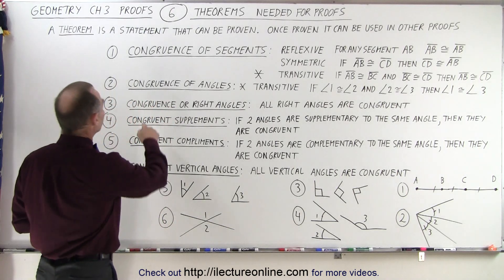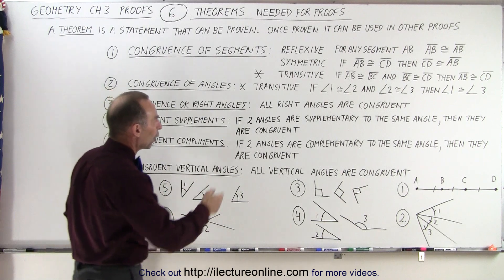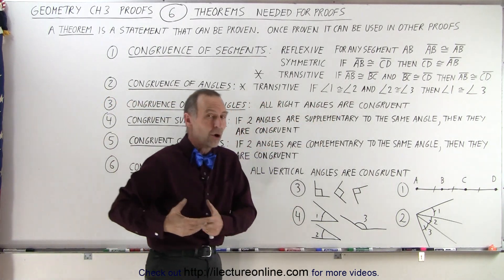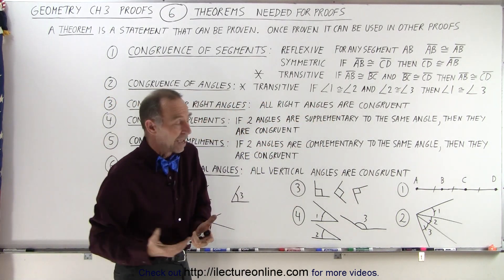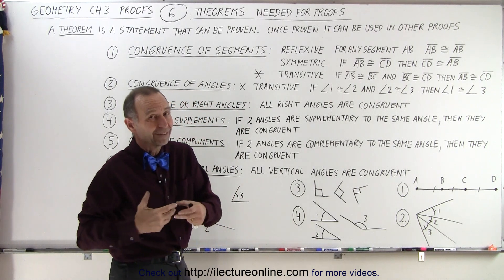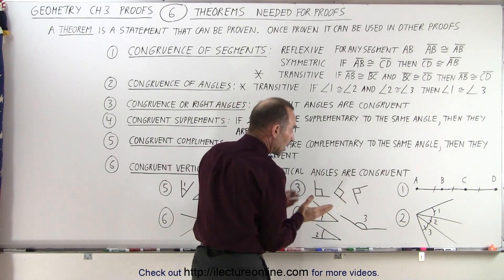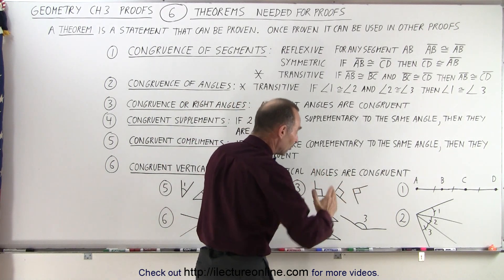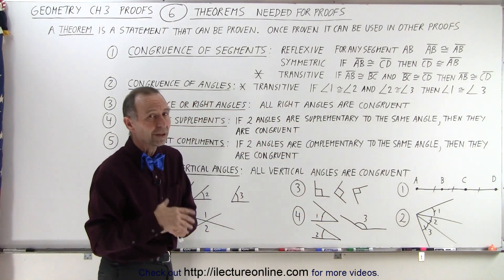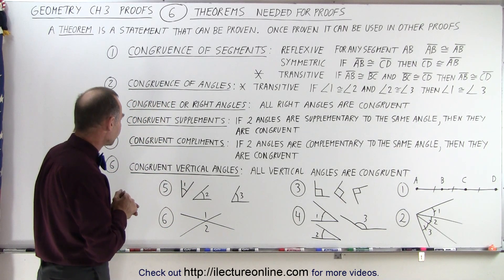The third theorem is the right angle theorem. It states that all right angles are congruent. That's because all right angles have an angle measure of 90 degrees, and since they all have the same angle measure, they must all be congruent. Regardless of the orientation of the right angle, they all have a measure of 90 degrees — therefore, by theorem, they're all congruent.